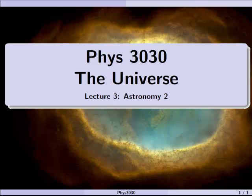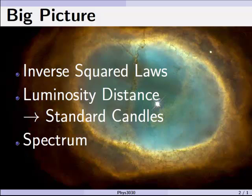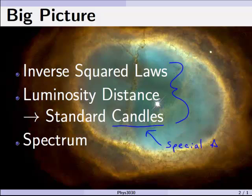Alright, Physics 3030, The Universe, Lecture 3. This is the second lecture about astronomy. We're going to continue our discussion of how we measure the distance to different stars and objects. We'll be talking about the inverse square law, which covers a lot of different laws in physics. We'll use that in conjunction with luminosity distance to measure how far away standard candles are — special types of stars whose properties allow us to measure their distance. Then we'll get to electromagnetic spectra.